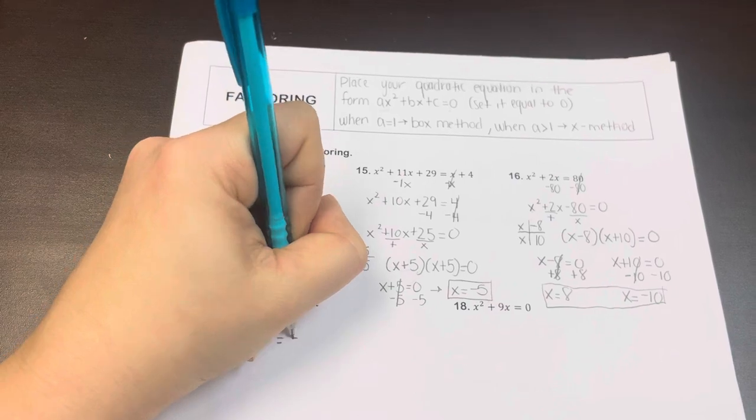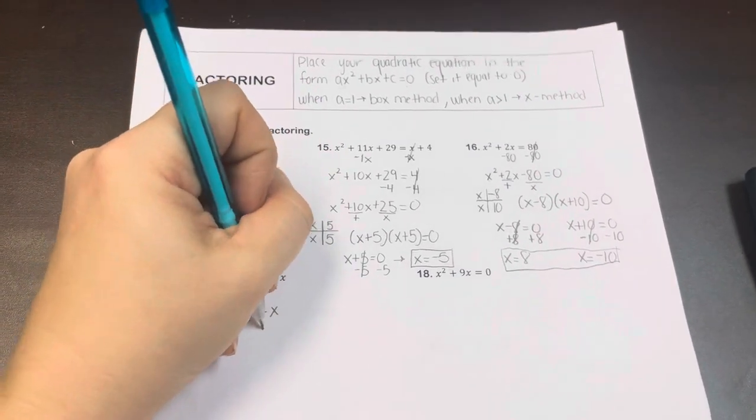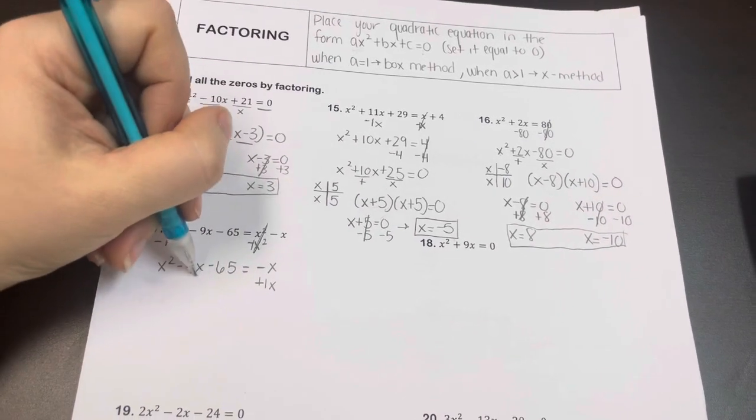And then I'm left with a negative x. To get that negative x to the left side, I'm going to add 1x. The term that I can combine that 1x with is this middle term.